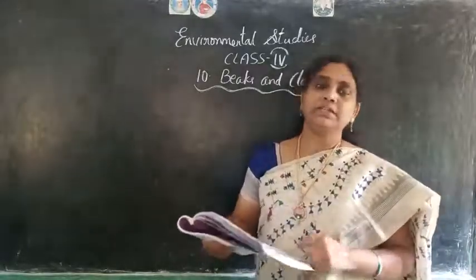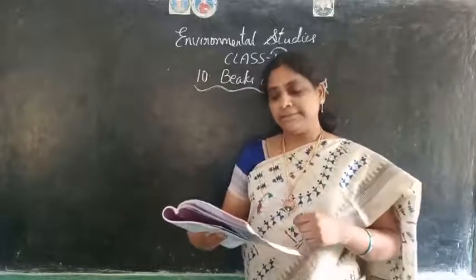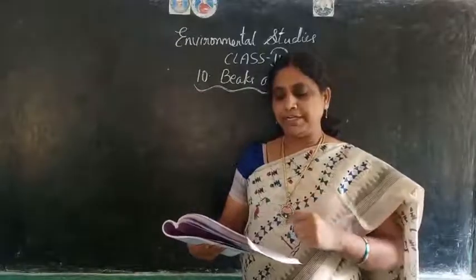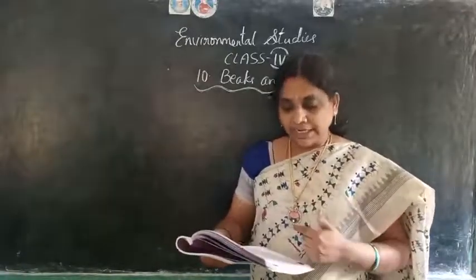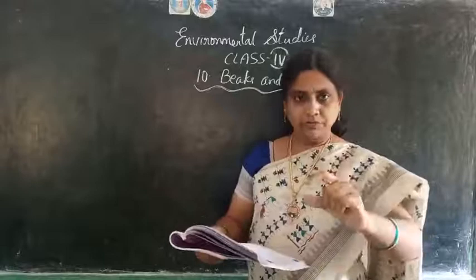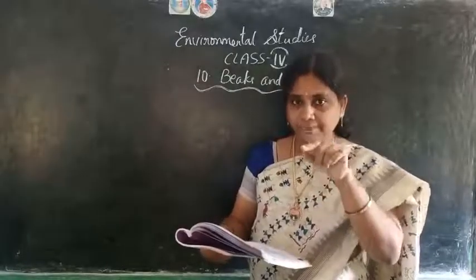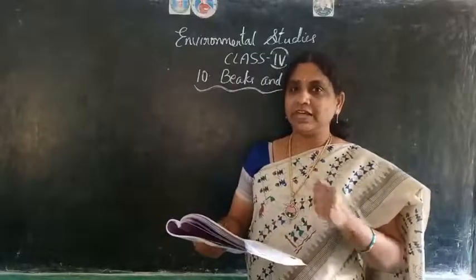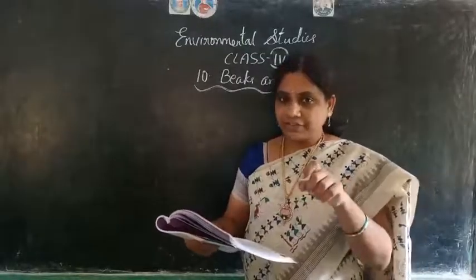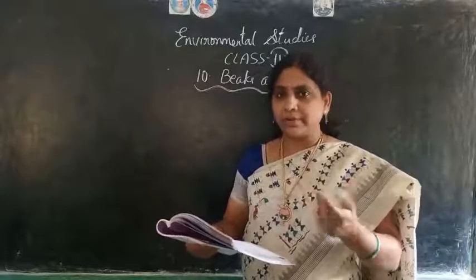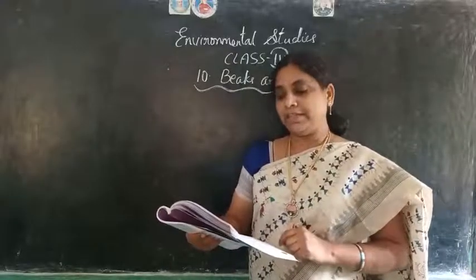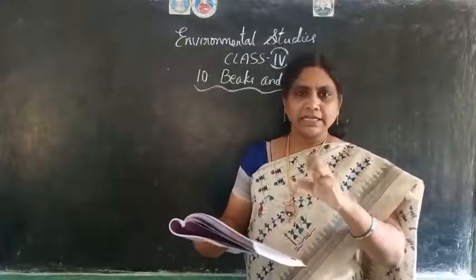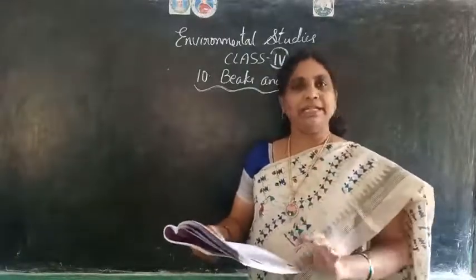The next type is the spear beak. Birds like herons and kingfishers have long, sharp, pointed beaks for fishing. These beaks are used to catch fish in ponds or lakes. Herons pick their prey up with their curved beaks and gulp it down.